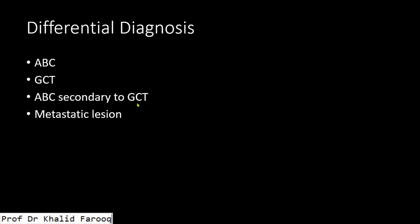Our differential will be between aneurysmal bone cyst, aggressive GCT, aneurysmal bone cyst secondary to aggressive GCT, and metastatic lesion. On biopsy, it is proved to be ABC secondary to GCT. Thank you very much.